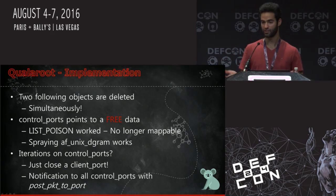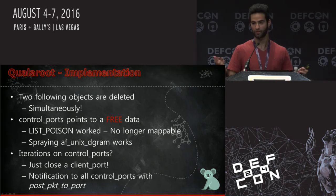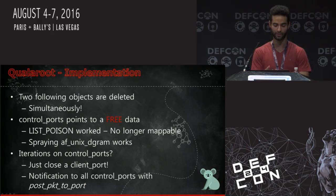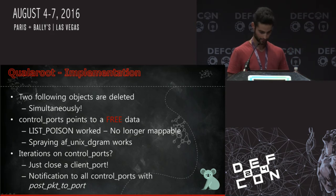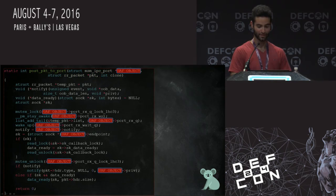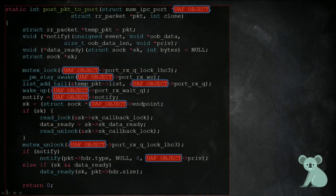We use Unix datagrams to spray that memory. Since this is the list of control ports, once we fake an object there, we want the list to be used — so we just create or destroy any endpoint in this address family. Each time we do that, all objects on the list must be notified. The notifying function is post_packet_to_port. Each object in the control ports list is passed to this function, which provides a lot of new primitives — from information disclosure to function calls, memory corruption, and many others.